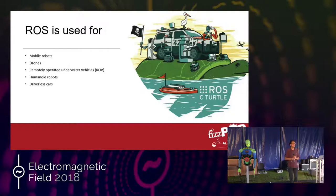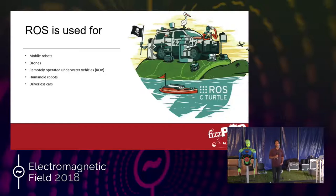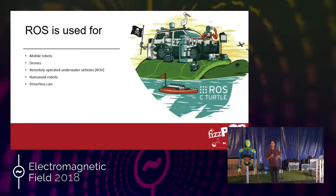ROS runs on pretty much any robot — it is designed to be as generic as possible, working on any kind of robot from humanoids, to armed robots, to cars, to drones. It does that by abstracting everything and making all the parts of the robot very modular. So if you want to move a robot around, you command the robot to move in three dimensions — forward or sideways — and then you have to write your own software to understand that command and actually move your own robot.